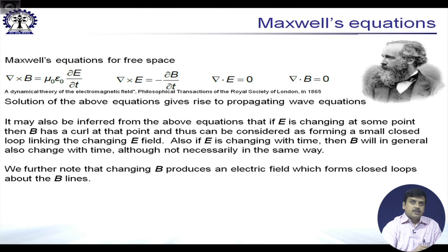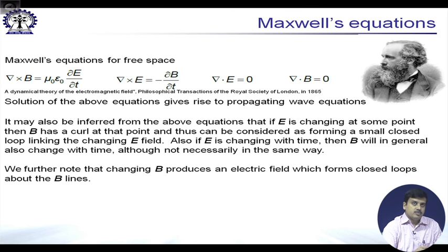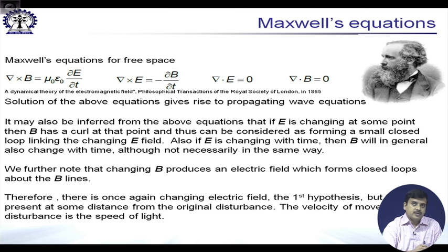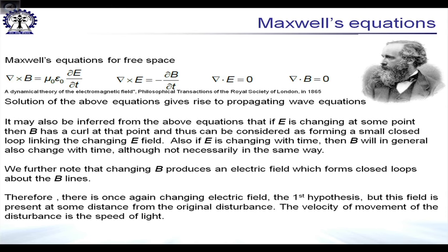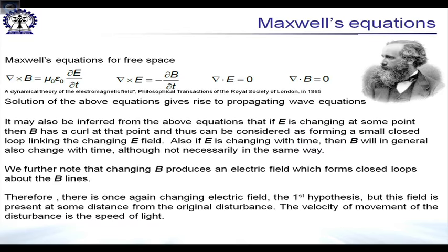The second expression tells us that the change in the magnetic field produces an electric field which forms a closed loop around the magnetic field lines. This brings us back to the first hypothesis about the changing electric field, but this field is at some distance from the original disturbance. The velocity of the disturbance is the speed of light. Clearly, a change in electric field could propagate through a medium to a distance, and the speed at which things propagate is the speed of light in free space.